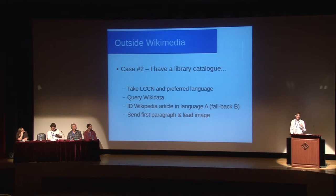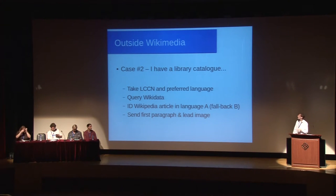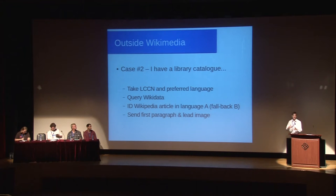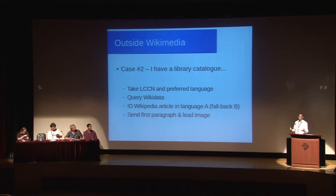In the second case, you might have a library catalogue that you want to give contextual information. The system could take a Library of Congress code and, if the system is running in German for example, query Wikidata with that code and language preference. Wikidata would match it to a Wikidata entity, match the entity to a language, match the language to a Wikipedia article, bring back the first paragraph of that Wikipedia article, and pop it up for the reader — giving context about who wrote the book right within the catalogue environment.